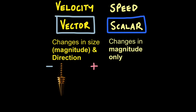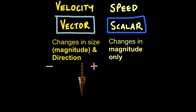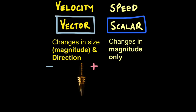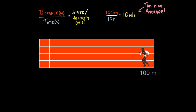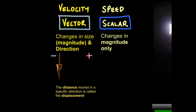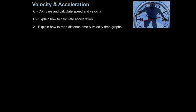Imagine a swinging pendulum going backwards and forwards. It has a speed value, but it's also moving in a specific direction — backwards and forwards. If we call the original movement a positive velocity, then when it moves backwards it would be a negative velocity. Similarly, if our runner were to run backwards at exactly the same speed, they would now have a velocity of minus 10 meters per second — telling us they're running at the same speed but in the opposite direction. The distance moved by an object in a specific direction is called the displacement. Remember: velocity has direction.